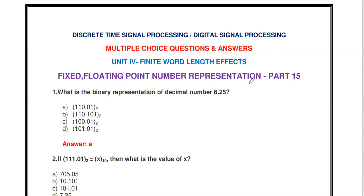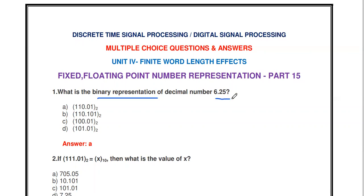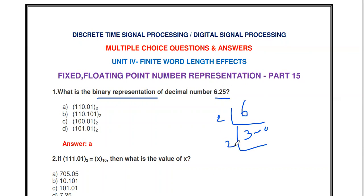We cover fixed point and floating point number representation, looking at objective questions. The first question: what is the binary representation of the decimal number 6.25? You already know how to convert a decimal number into binary representation. For the integer part, 6, you divide by 2 to get 3 with remainder 0, then divide again to get quotient 1 with remainder 1. So the binary representation for 6 is 110.